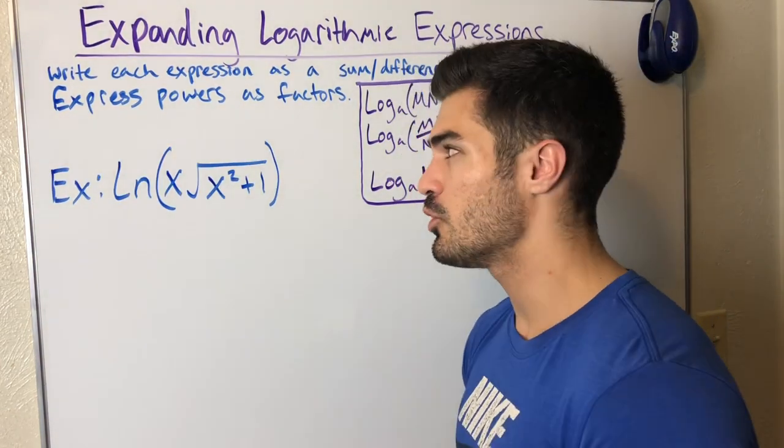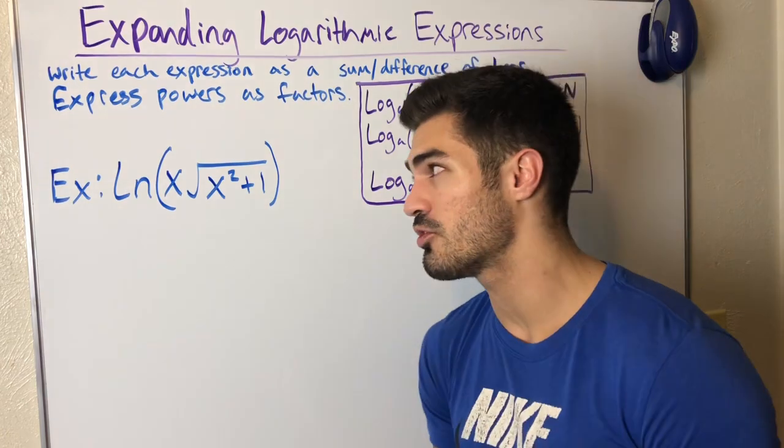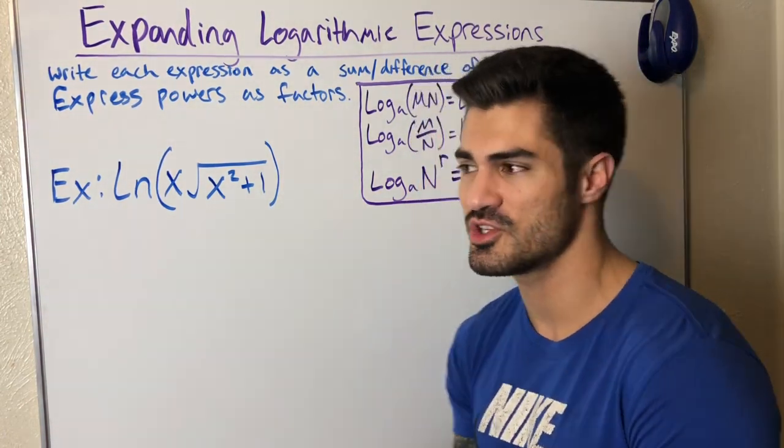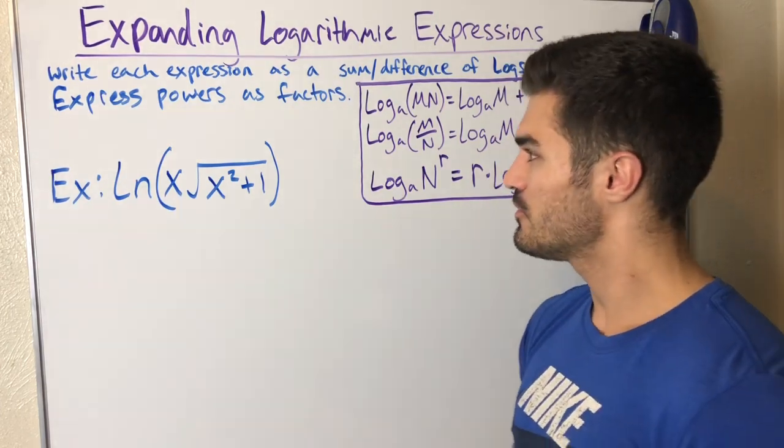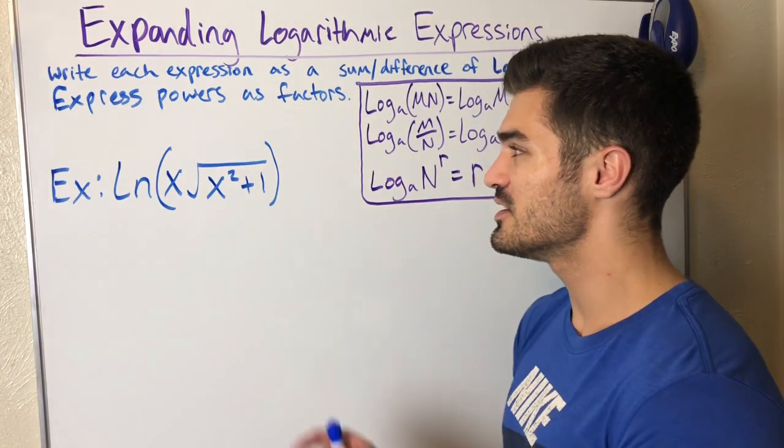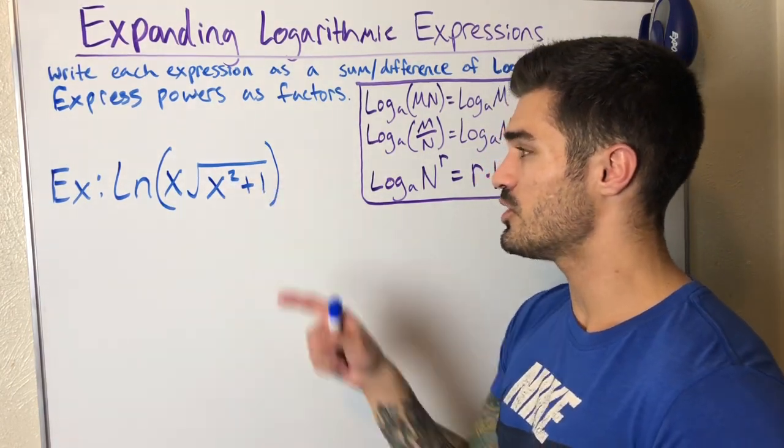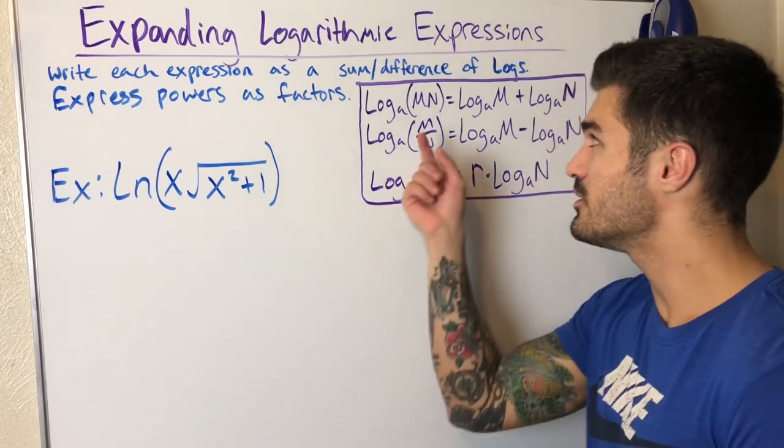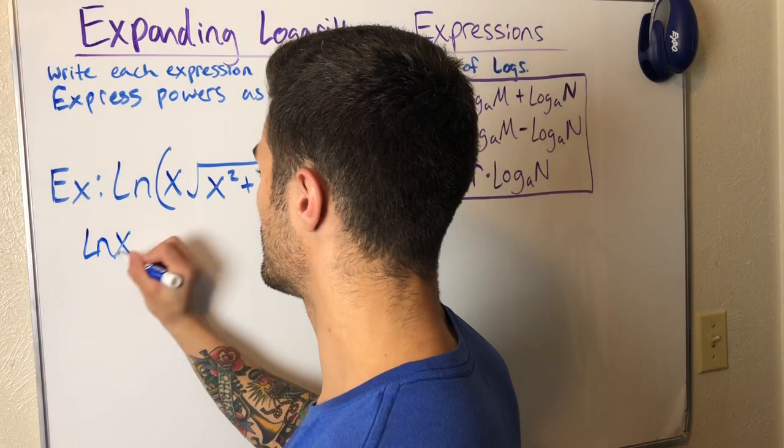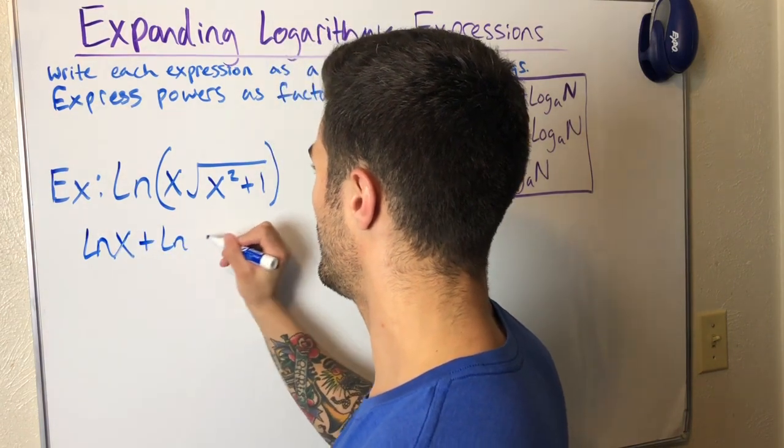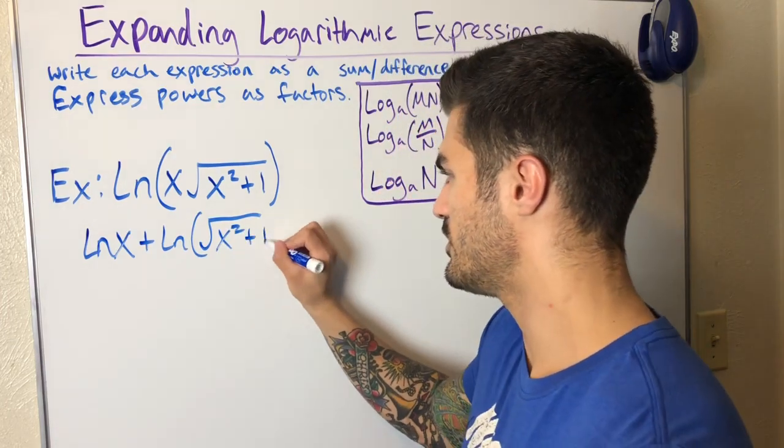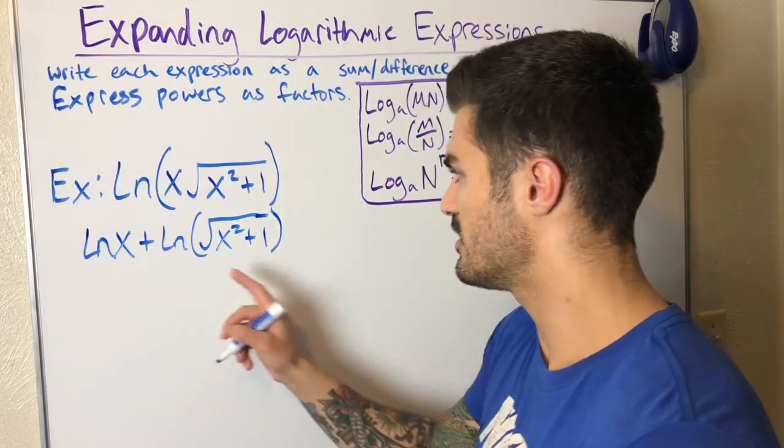Alright, so we're gonna do a few more examples. Let's go ahead and expand this logarithmic expression. In this case we have natural log, but again that makes no difference to us. We're just expanding it. We don't care what the base is. So first thing I'm gonna do is notice that there's two things being multiplied in here. We have x times the square root of x squared plus one. So I can separate that and it becomes addition: ln x plus ln, and again this square root x squared plus one is all in this second ln.